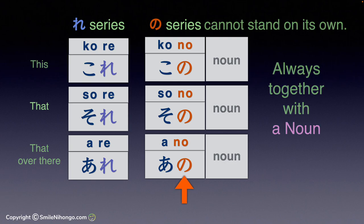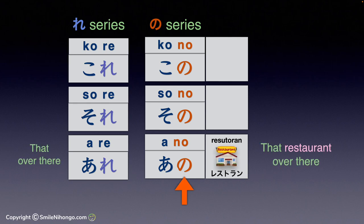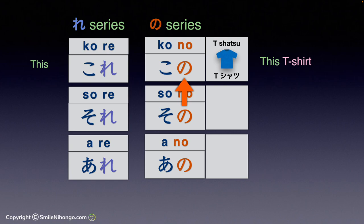For example, if you want to say 'that apple' instead of just 'that,' you have to say そのりんご — and not それりんご. To say 'that restaurant over there,' you have to say あのレストラン — and not あれレストラン. To say 'this T-shirt,' you have to say このティーシャツ — and not これティーシャツ.